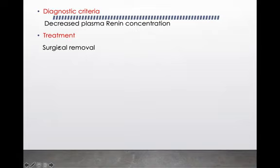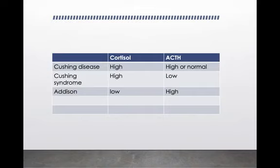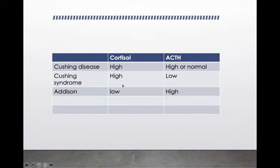Treatment of Conn syndrome is to treat the cause — usually the tumor of zona glomerulosa — by surgical removal or radiation to reverse the process. In comparing these diseases: in Cushing disease, cortisol is high and ACTH is high or normal; in Cushing syndrome, cortisol is high and ACTH is low; in Addison disease, cortisol is low and ACTH is high.